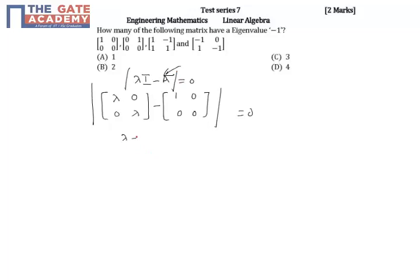This will be lambda minus 1, 0, 0 lambda, with determinant equal to 0. This implies lambda minus 1 times lambda equals 0. So the eigenvalues are 1 comma 0.